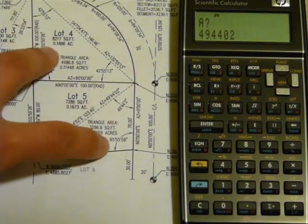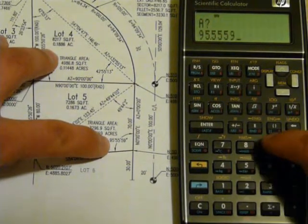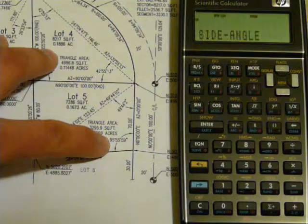Next angle: 95, 55, 59. Press RS to continue. It will solve the triangle.